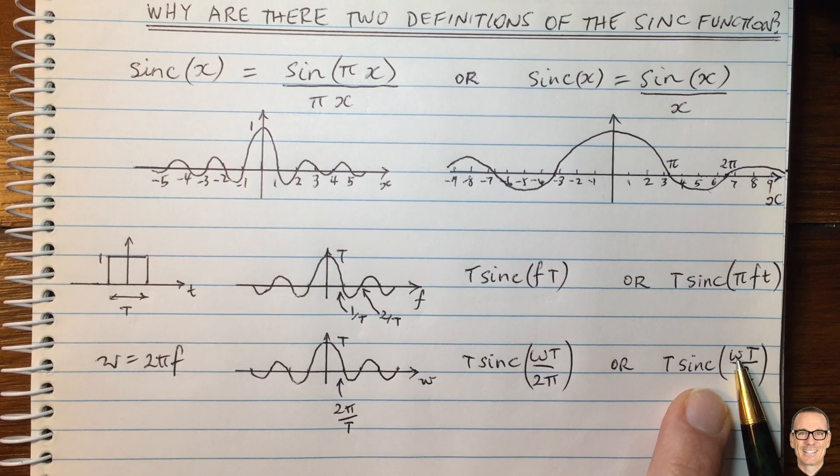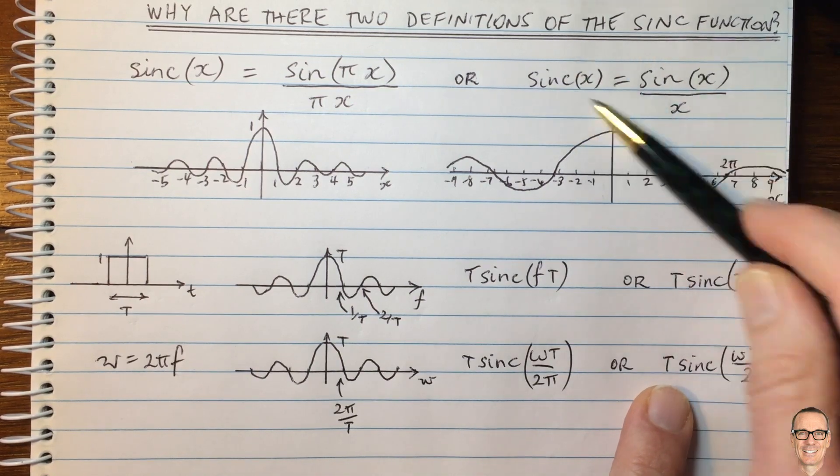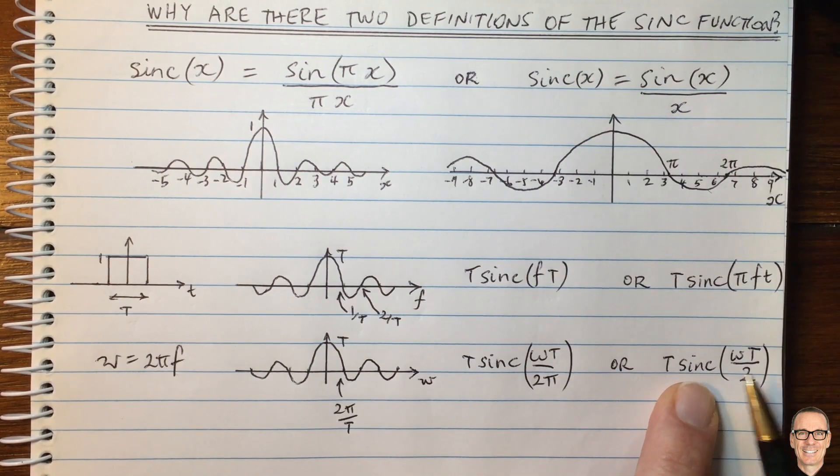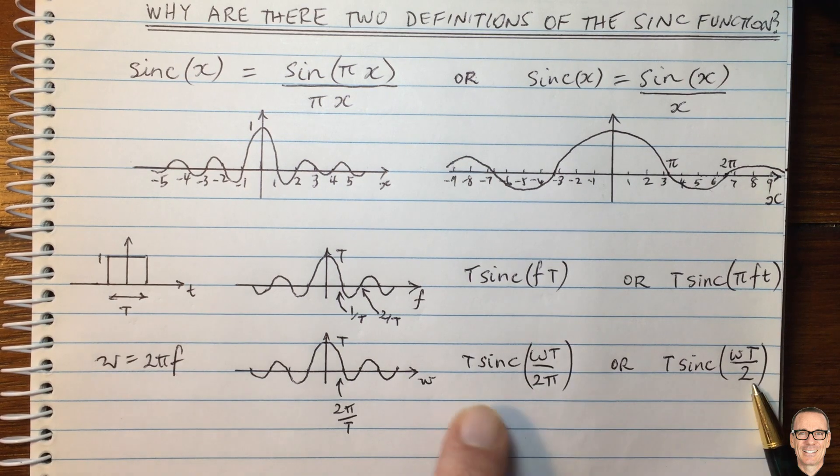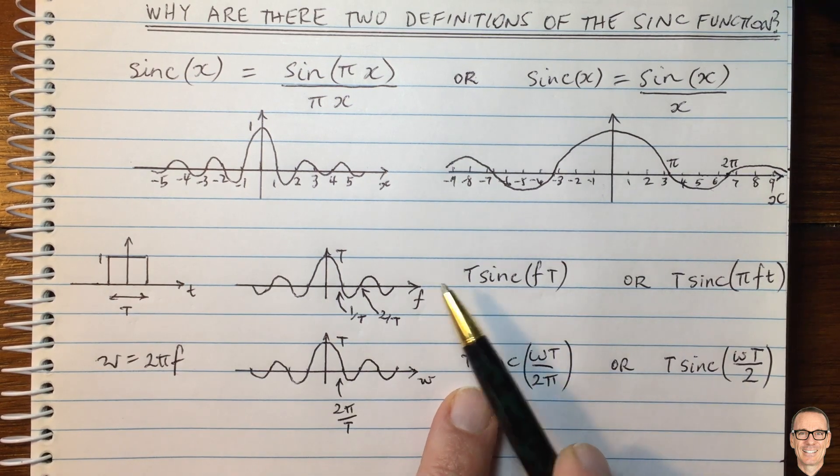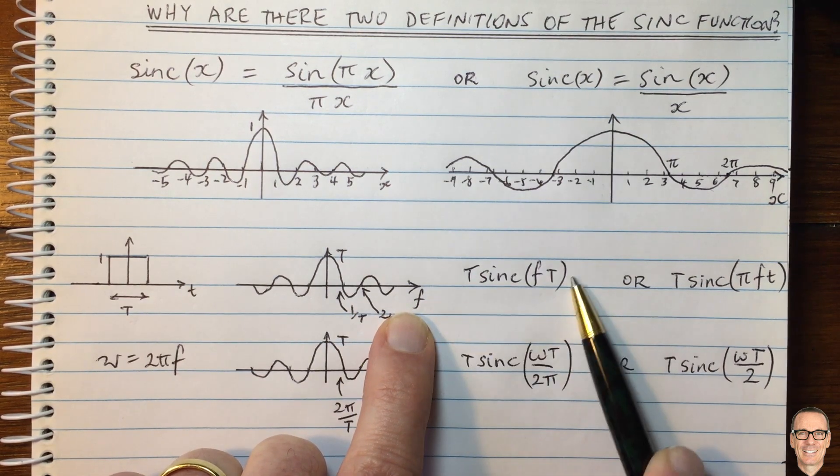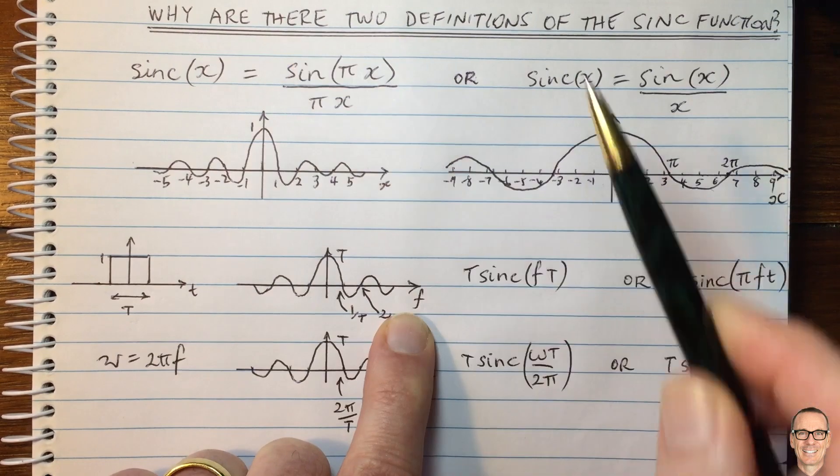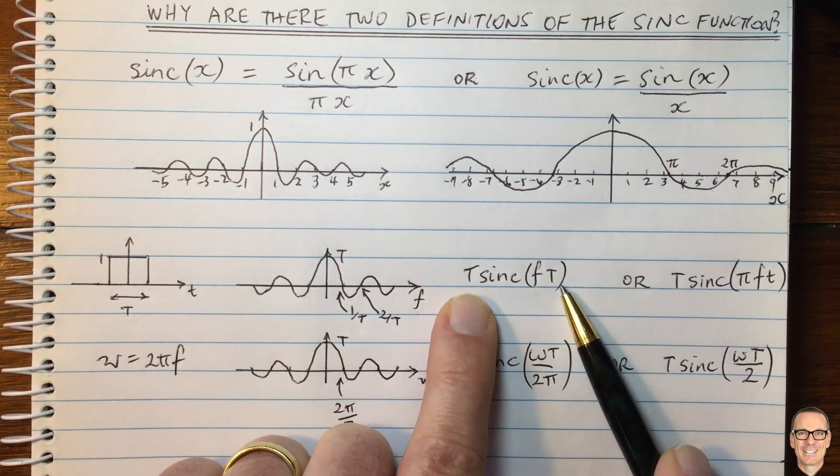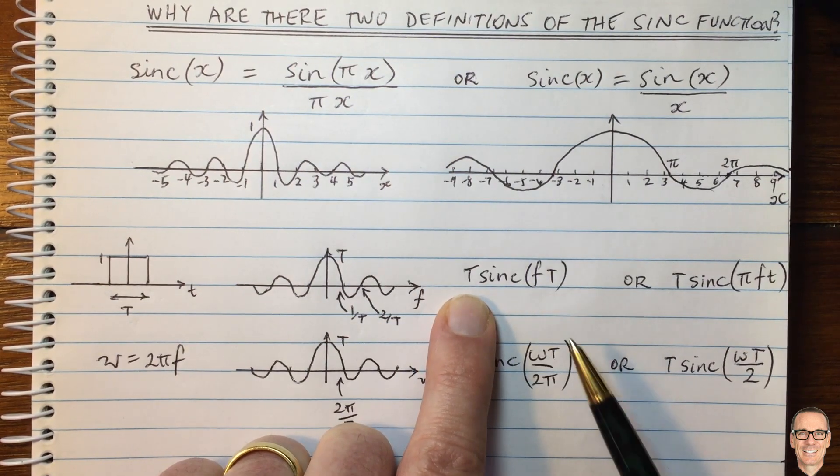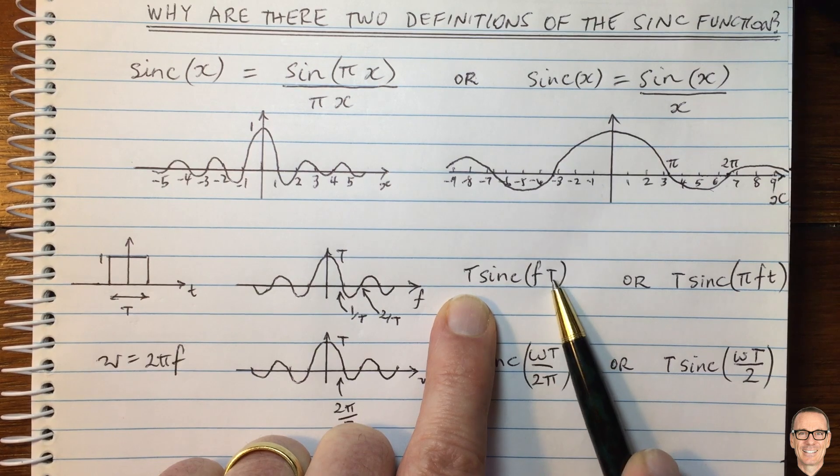But if you were to write it in terms of radial frequency, using the right-hand definition, it would be capital T sinc omega capital T divided by 2. So I think you can see if you were interested in looking at the frequency in terms of hertz, this left-hand definition of sinc gives you a nice compact form where you don't have the pi appearing, and you can see that direct relationship.